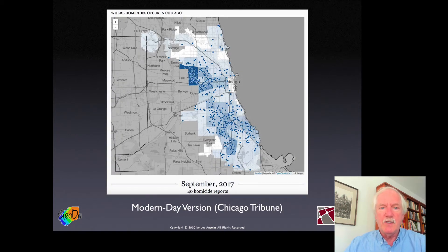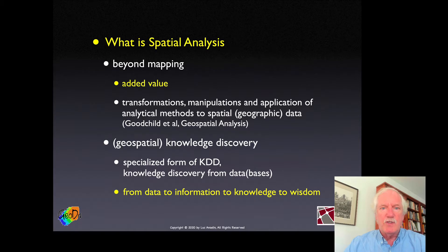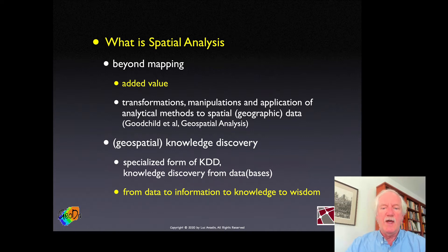This is an example from a couple of years ago — a map that appears in the Chicago Tribune on a regular basis, showing occurrences of homicides in a particular period of time. We have spatial information, location, and we try to make some sense out of that. That is really what spatial analysis is about.